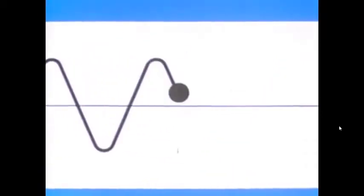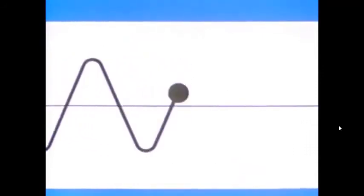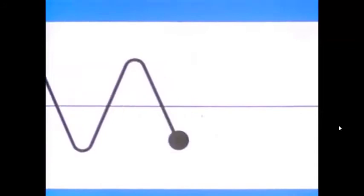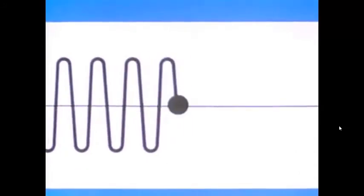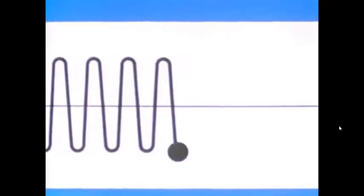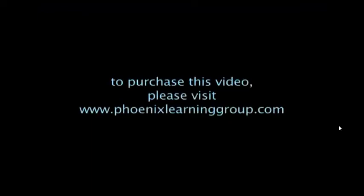The frequency of a sound wave is a measure of how many cycles per second the sound wave produces in the medium it's traveling through. When the frequency of a sound wave goes up, more waves per second strike our ears, and we hear a higher pitched sound. When the frequency goes down, we hear a lower pitch.